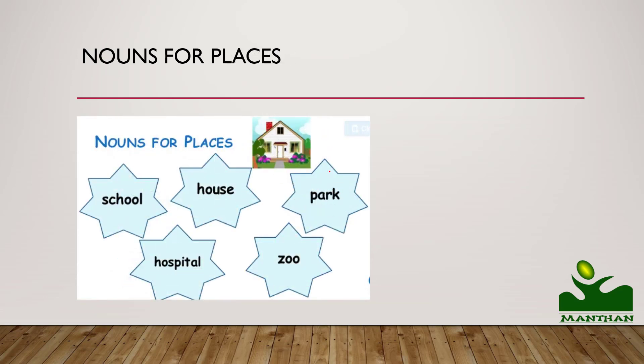Nouns for places — like school, house, hospital, park, zoo. Jahaan jahaan ap jate hain — kisi bhi village mein jate hain, ghar mein jate hain, hospital, school, zoo, park, garden. These are all nouns for places.